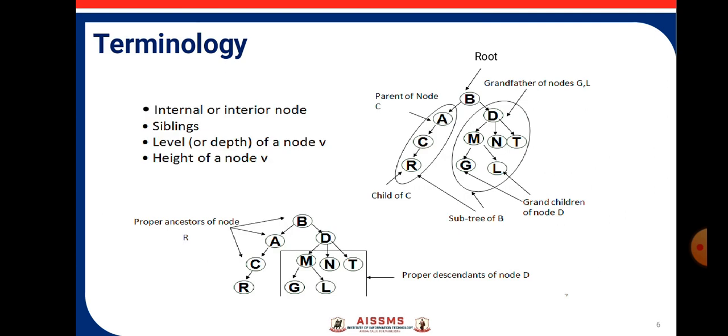Here consider the first diagram where the root node is B. Now there is parent A of C. Then, the child of C is R. Here you can see that this is a subtree of B which starts from A, C, R. It is a subtree and another subtree which starts from the D who has a child as M, N, T. M has child G, L. When we talk about G, L, they are the grandchildren of the node D. D stands for the grandfather of G, L.